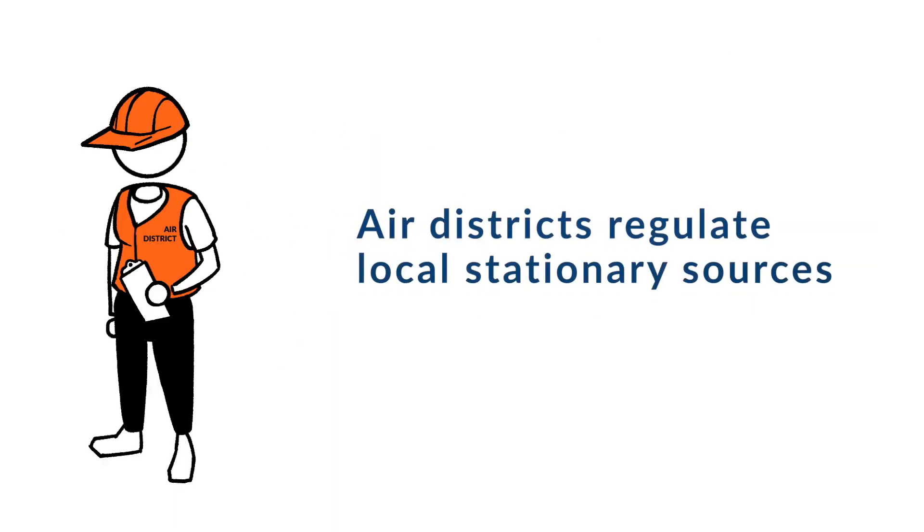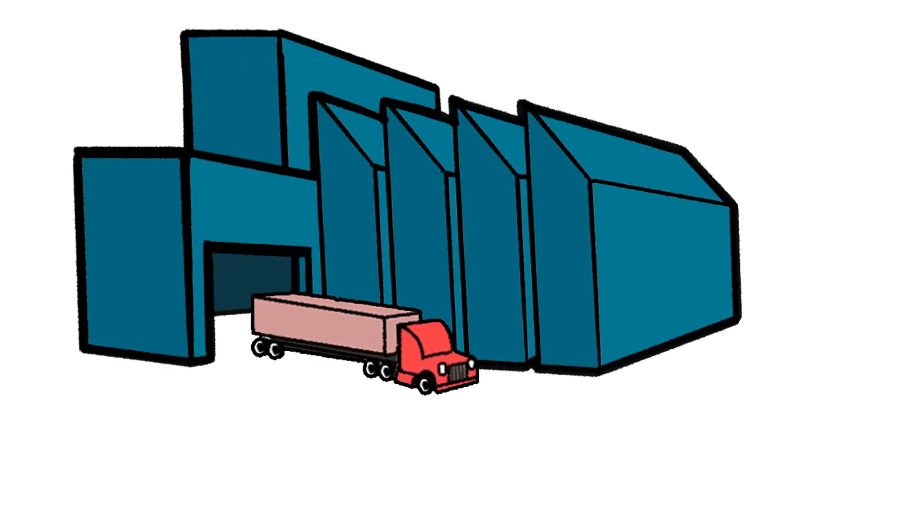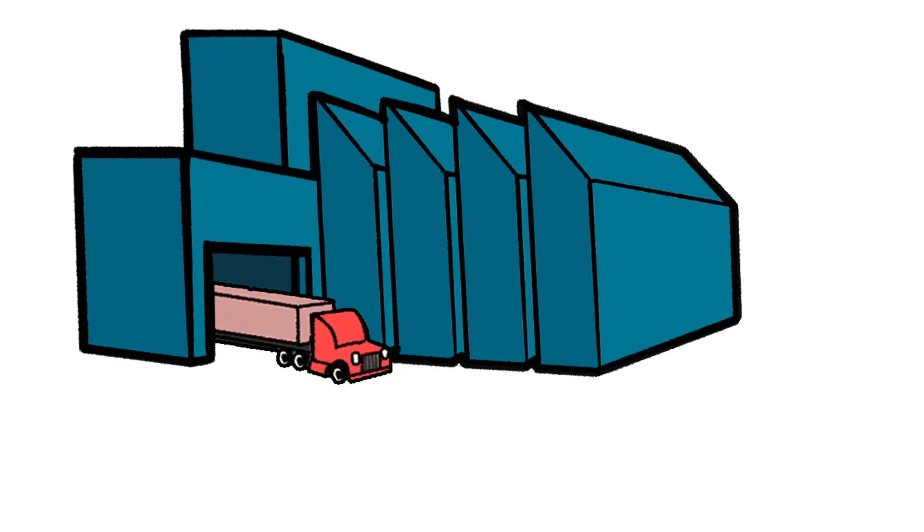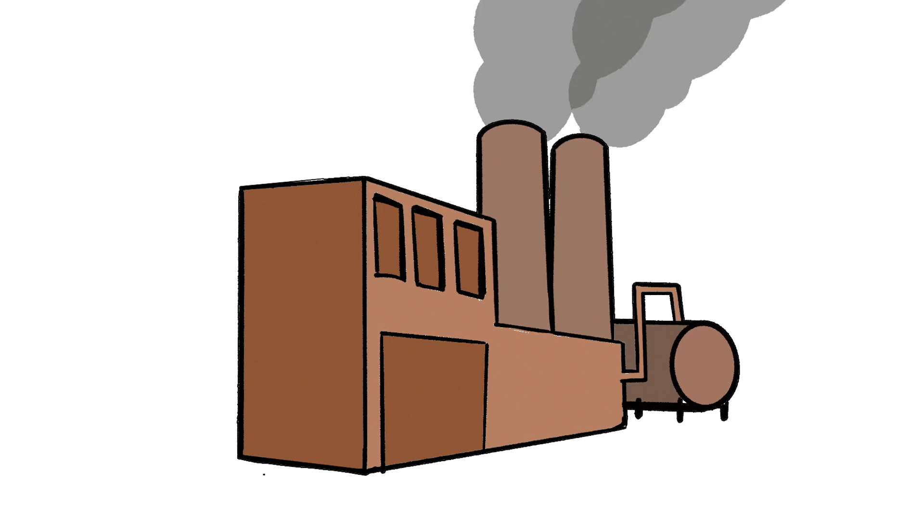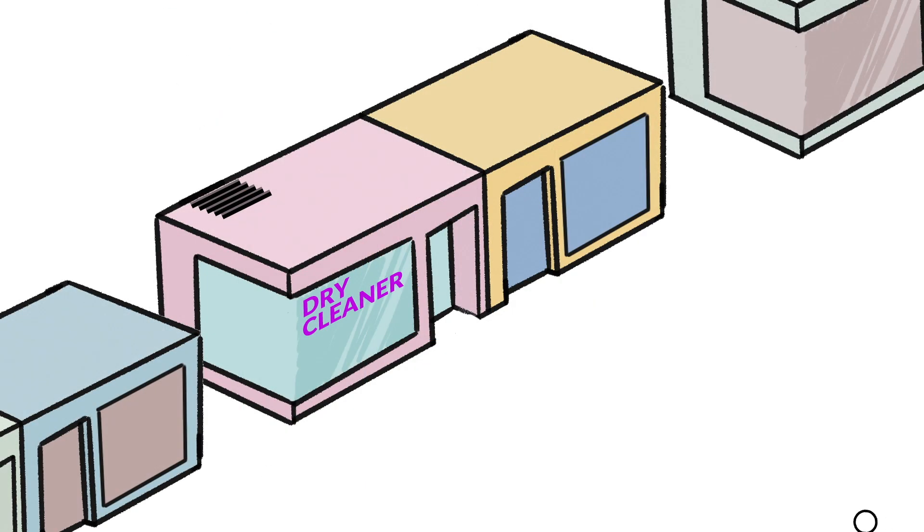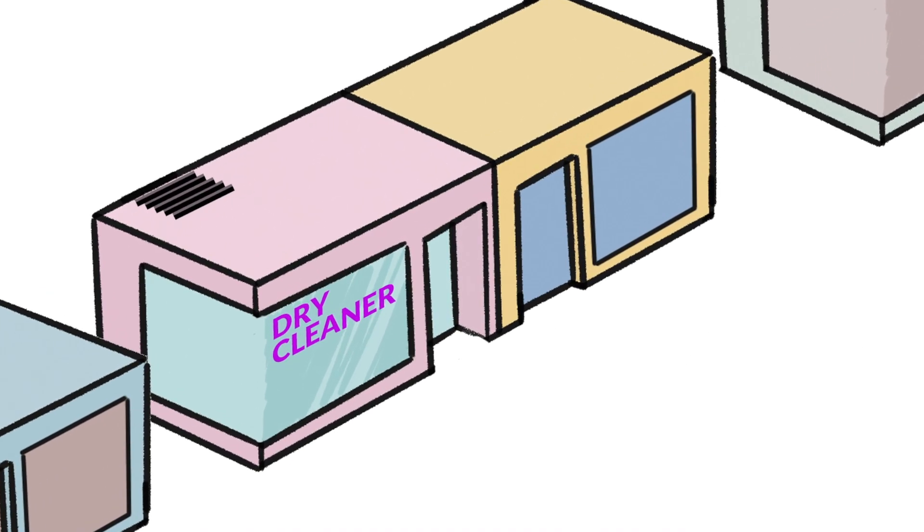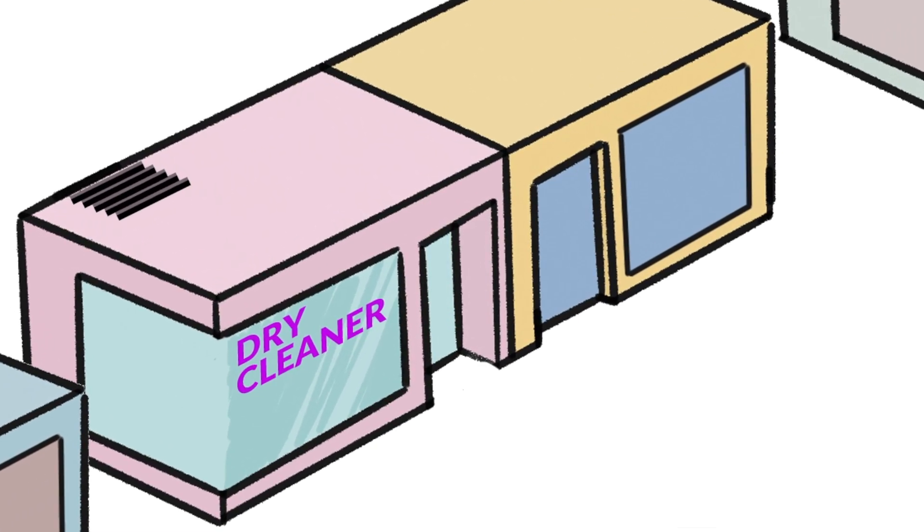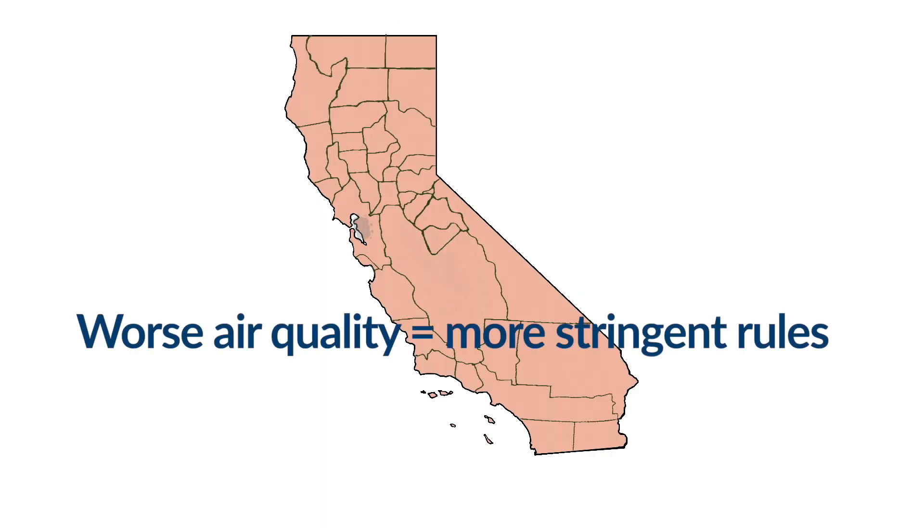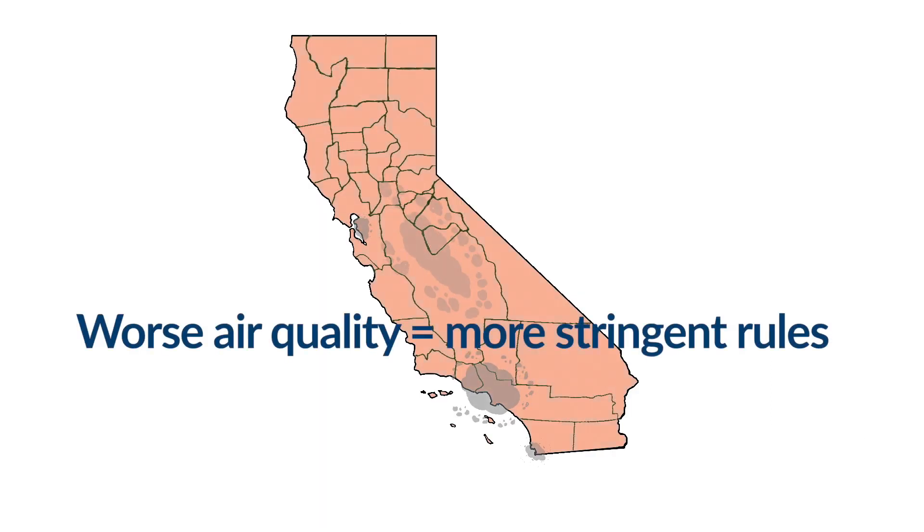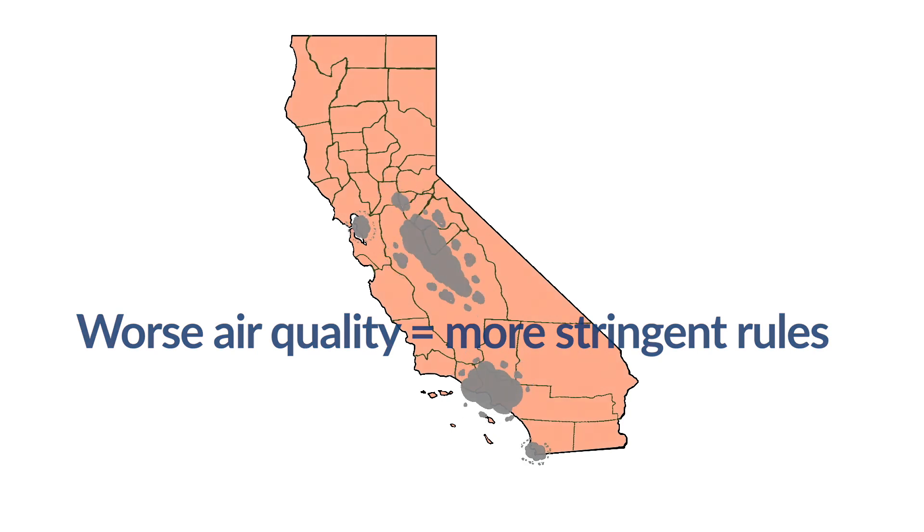Air districts adopt regulations and other procedures to control criteria air pollutants and toxic air contaminants, but not greenhouse gases, from local stationary sources such as factories, power plants, and dry cleaners. Air districts follow a regulatory process like CARB's when adopting rules. State and federal law requires air districts that have poor air quality to adopt more stringent air pollution rules than areas with better air quality.